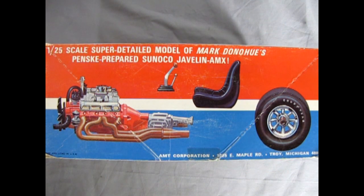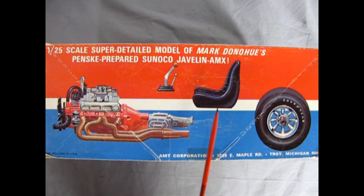This is a 125th scale super detailed model of Mark Donahue's Penske prepared Sunoco Javelin AMX. It includes great features like the AMC engine, the lockout shifter, the bucket seat, Goodyear tires, and these great Trans Am style racing wheels.